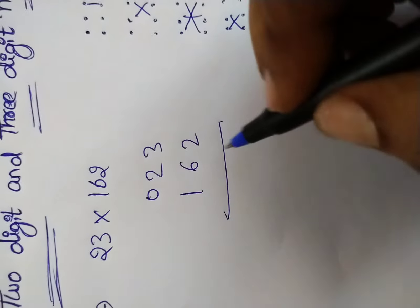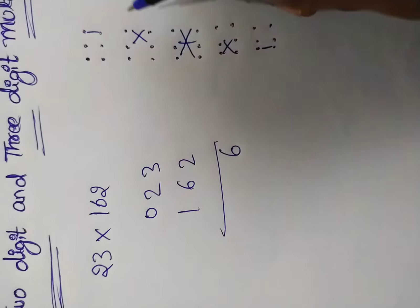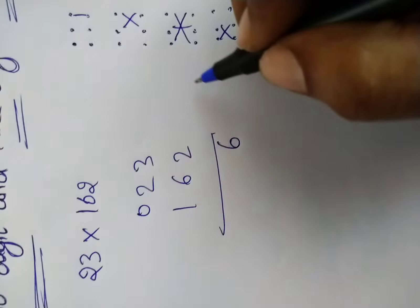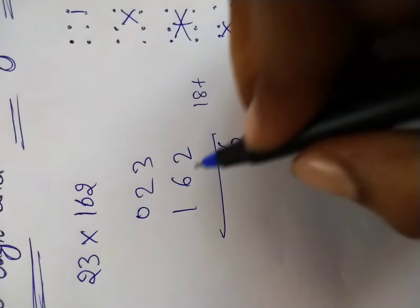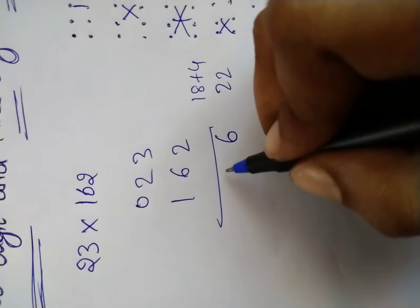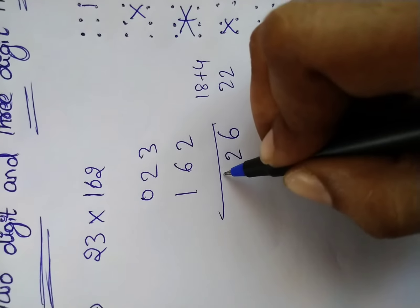First unit place and tens place. Next unit place and tens place. 6 times 3 is 18 plus 4 equals 22. 2 is carry forward.